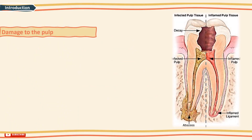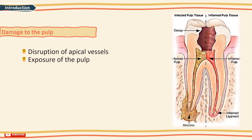Damage to the pulp can occur as a result of many factors: disruption of the apical vessels, exposure of the pulp by crown or root fracture, and hemorrhage and inflammation of the coronal pulp resulting in strangulation.